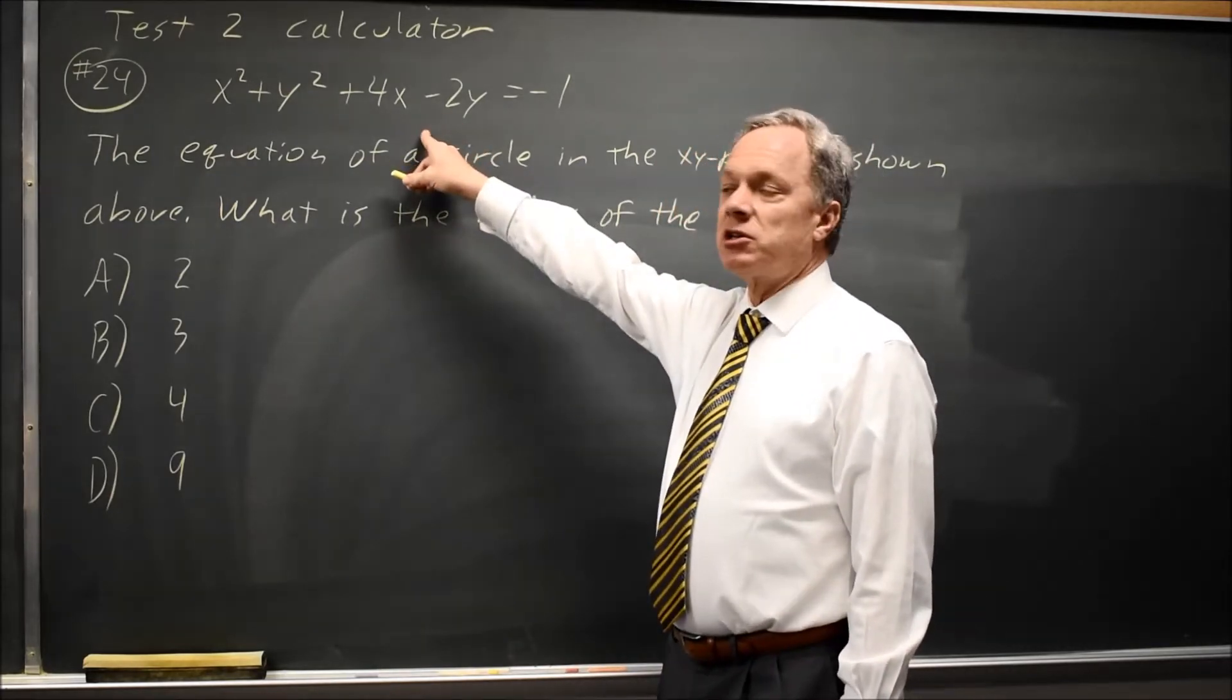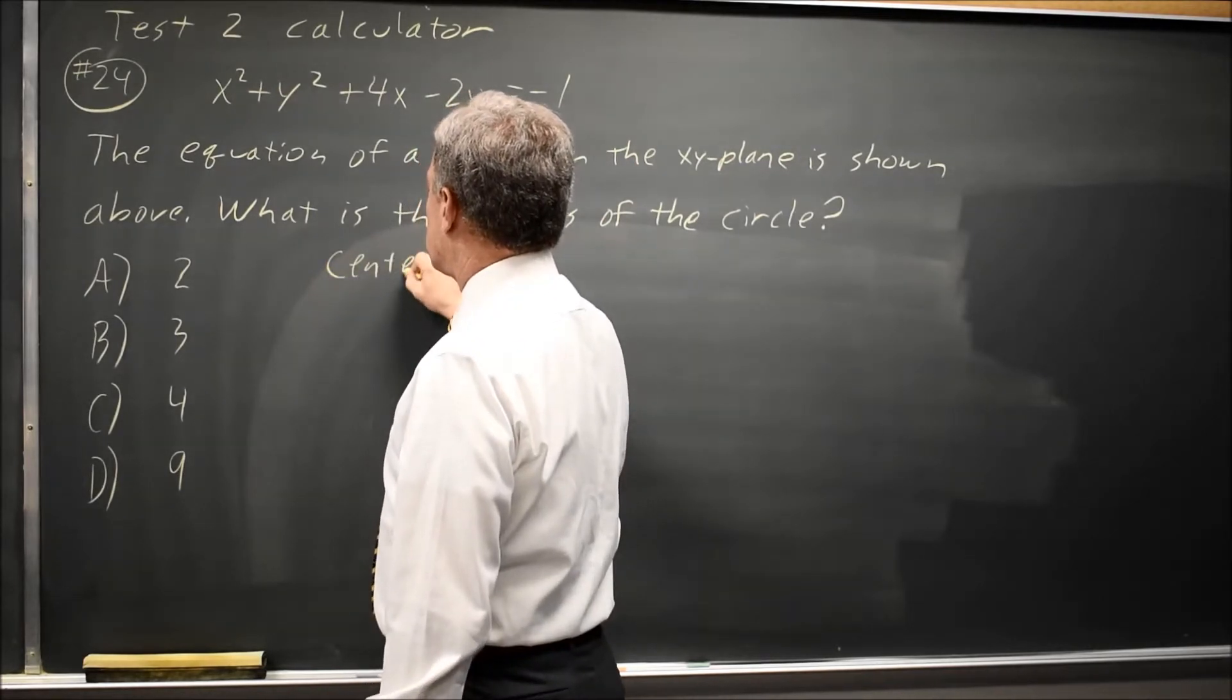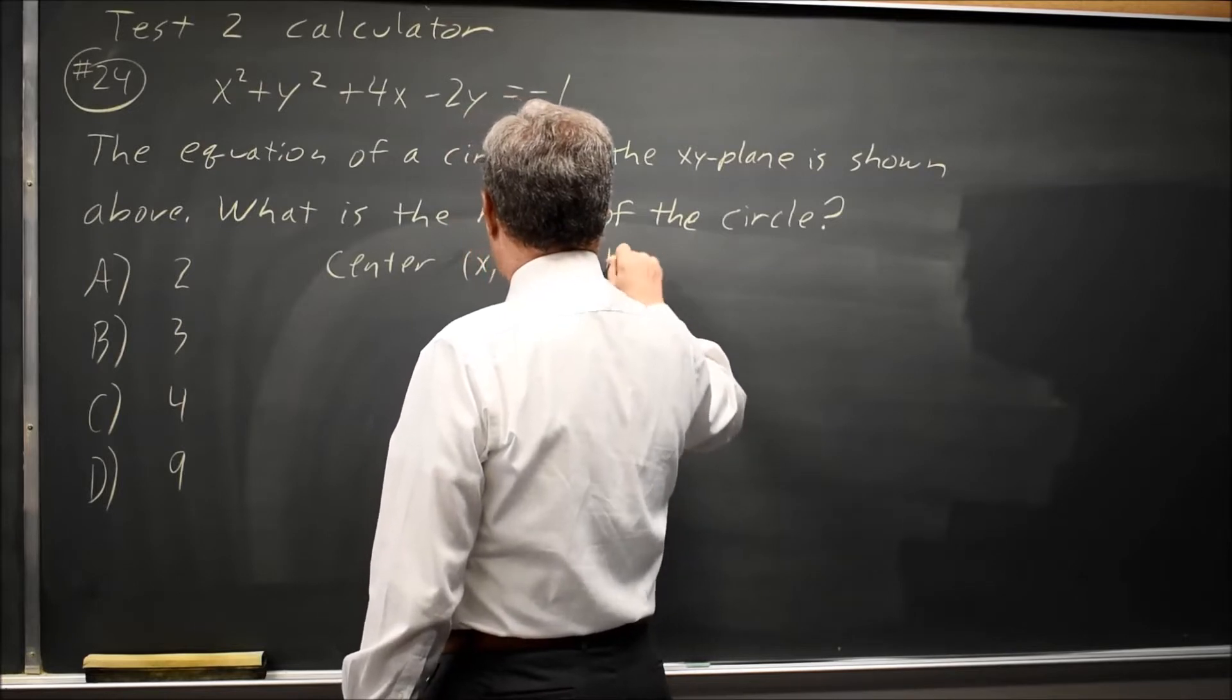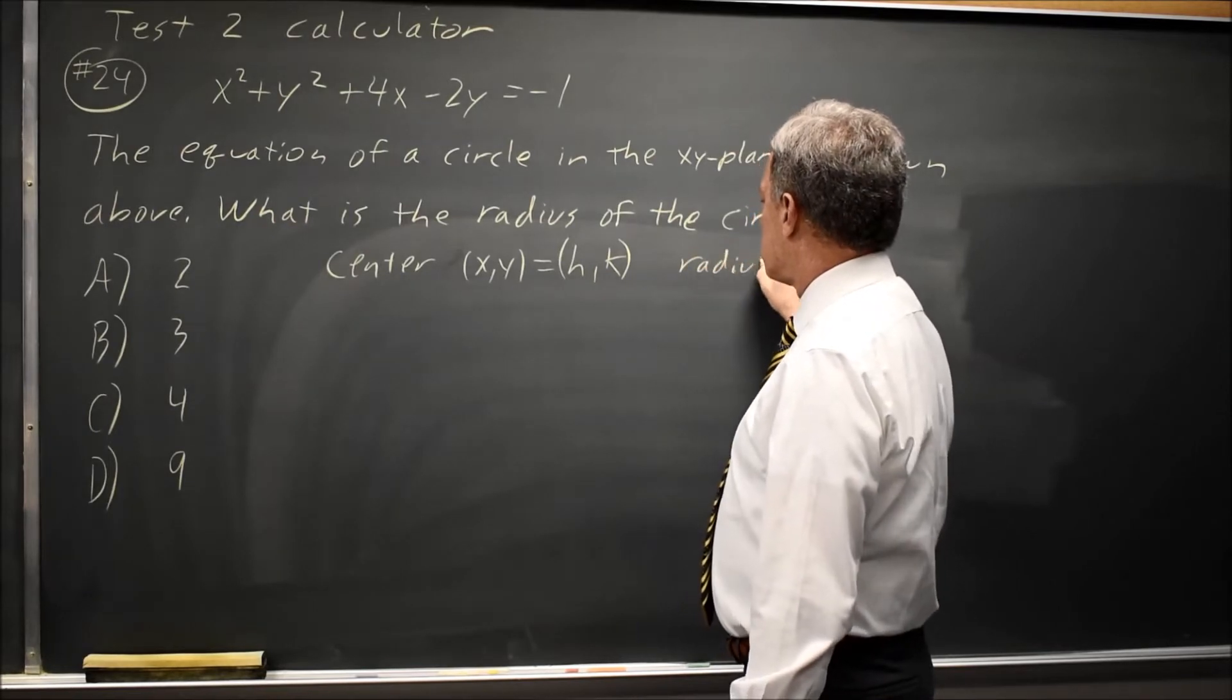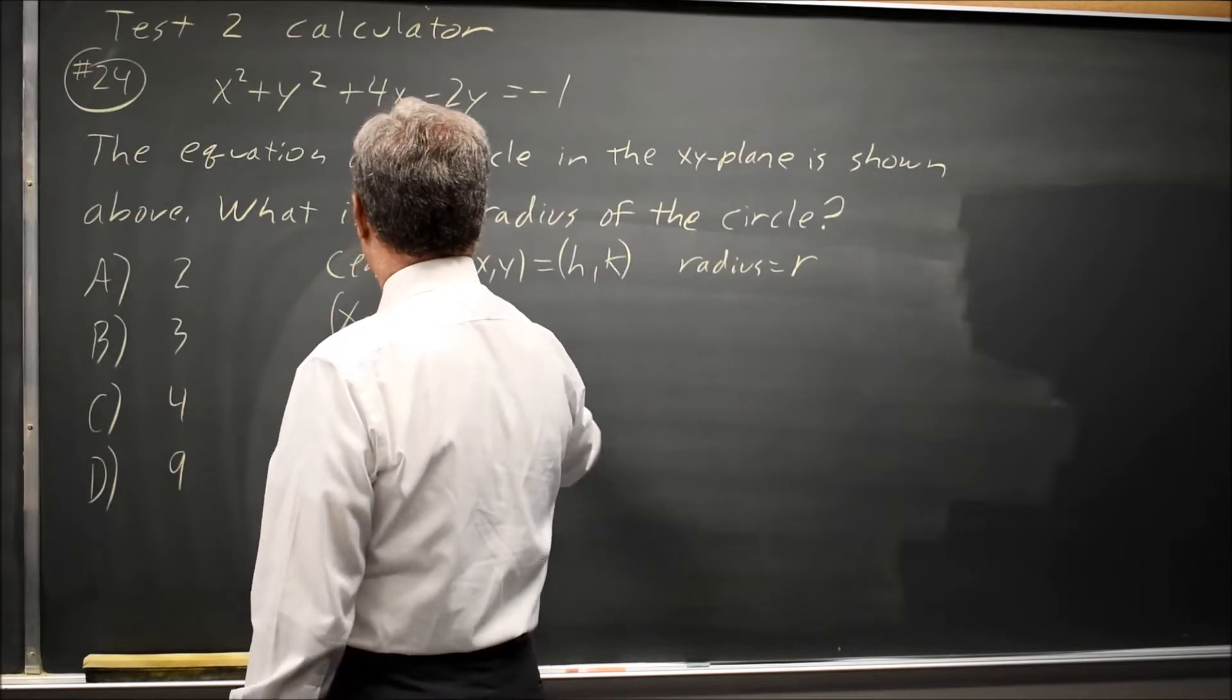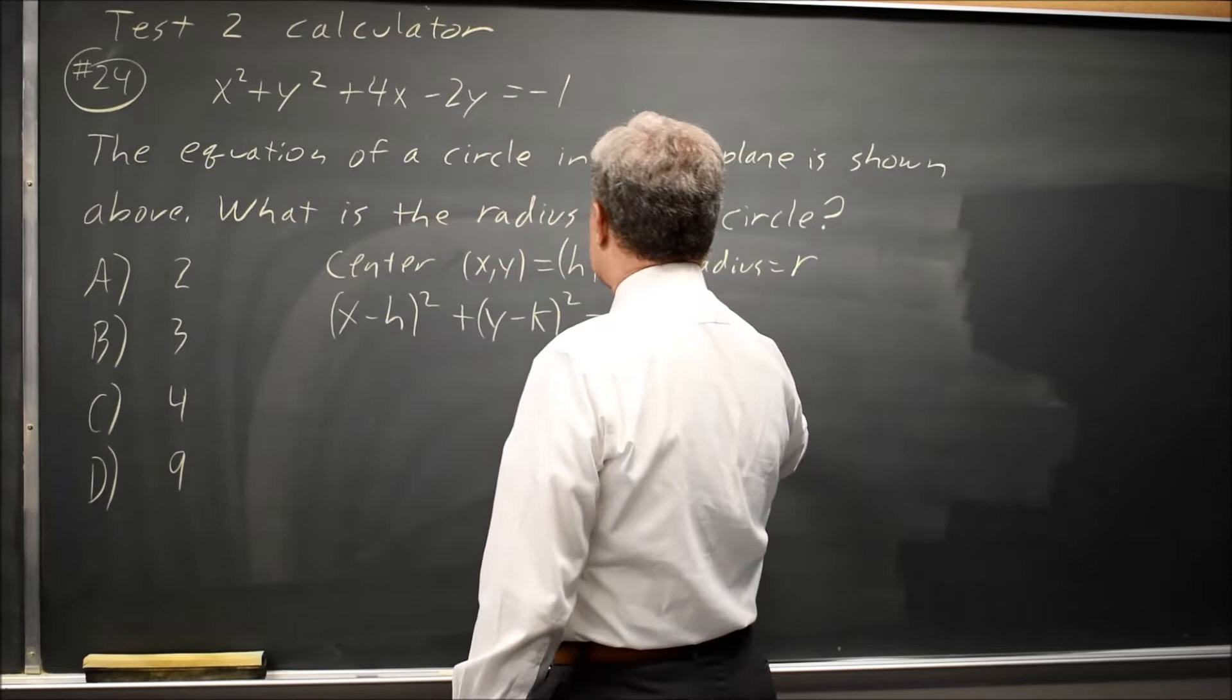When they're asking about the equation of a circle, I'd like to start by writing center xy equals hk, meaning the xy coordinates of the center are h and k, and radius equals r. The general equation is x minus h squared plus y minus k squared equals r squared.